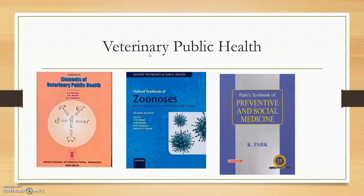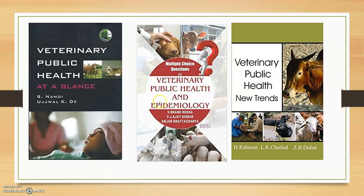For veterinary public health, Sherry Karbu's Preventive Veterinary Public Health published by ICAR, New Delhi, is recommended. The Oxford of Zoonosis deals with public health control and is used by MBBS students as well, since zoonosis is the connection between veterinarians and human doctors. Park's Preventive and Social Medicine can be used for environmental hygiene and sanitary measures. There are also MCQ books and Zoonosis and Veterinary Public Health books covering emerging zoonosis and health protocols.